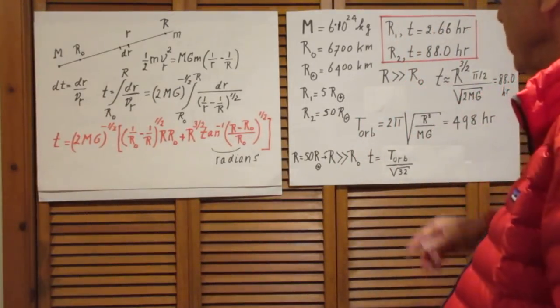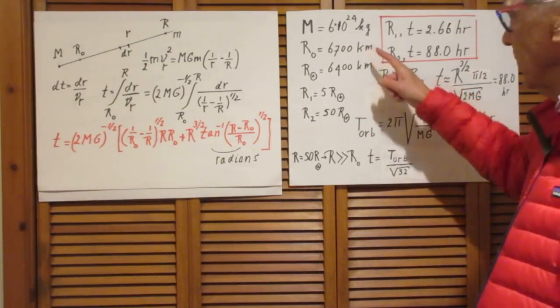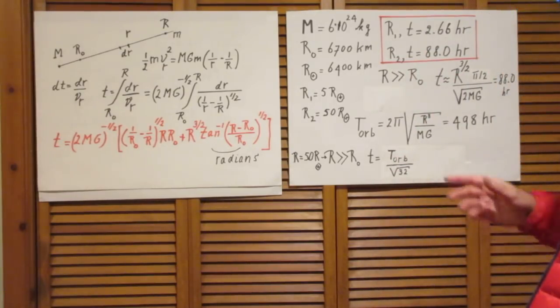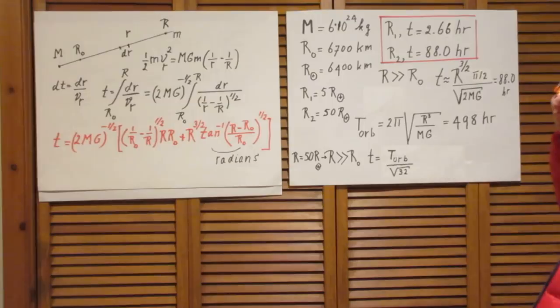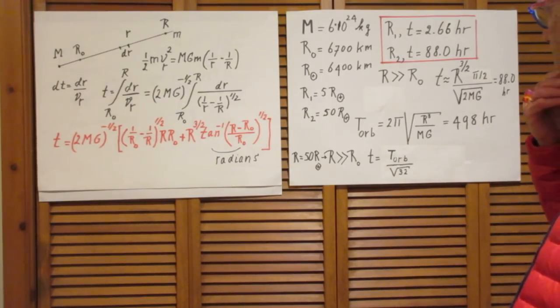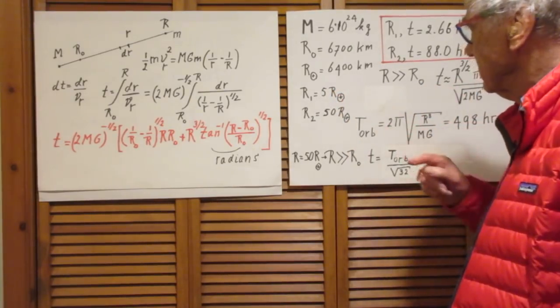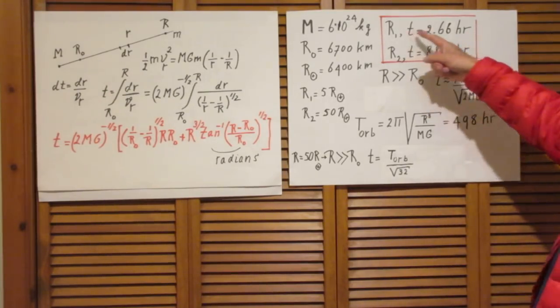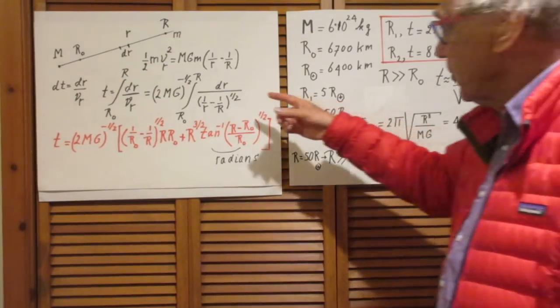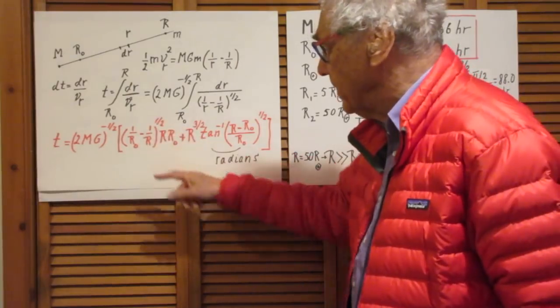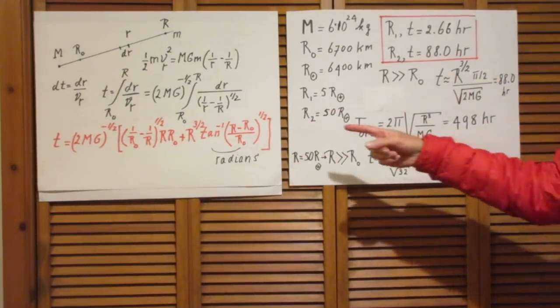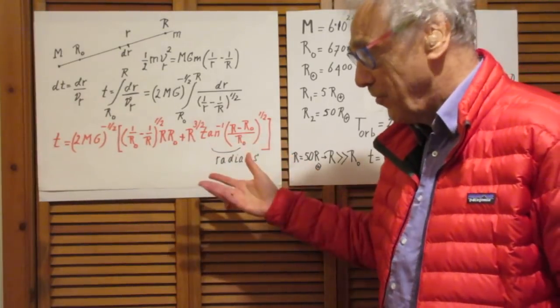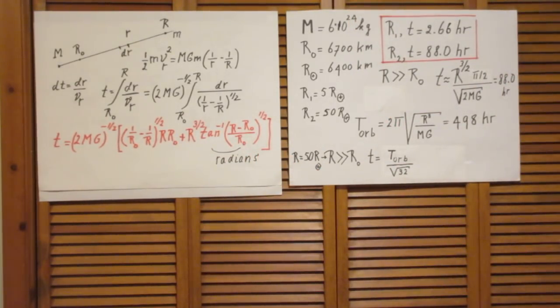So capital M is the mass of the Earth. R0 was 6700 kilometers, top of the Earth's atmosphere. We have taken for the Earth's radius approximately 6400 kilometers, just to get a nice number. And the first question now is, what is the freefall time if capital R is 5 Earth's radii? That's the answer. I thought it was a waste of my time and your time to tell you what this is, and what that is. Obviously, you should be able to use this equation, because to find the equation is not easy, but to use it is trivial, of course. So I find 2.66 hours.